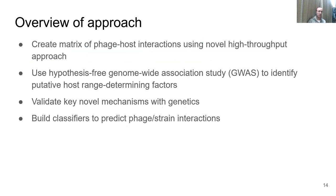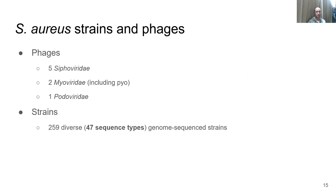To give an overview of my approach: I'm building a matrix of phage host range interactions using a novel high-throughput method, using a hypothesis-free genome-wide association study to identify possible host range determinants in the host, showing these have causative mechanisms through microgenetics, and then building classifiers to predict phage-host interactions. The phages I examined represent all major classes of S. aureus phages — Siphoviridae, Myoviridae, and Podoviridae — and the strains are a diverse set covering 47 different sequence types to give a snapshot of species diversity.